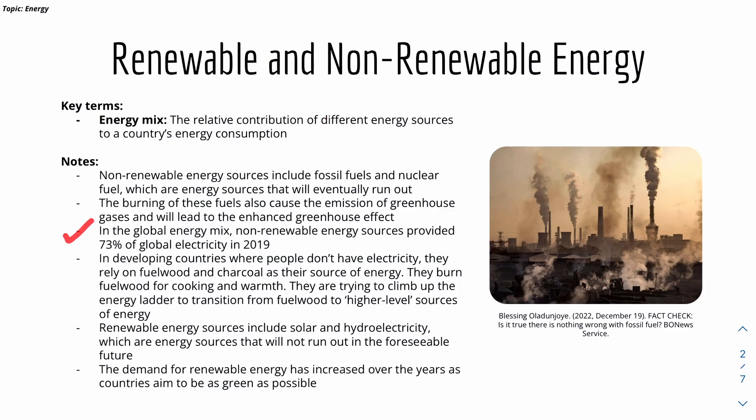Here are some statistics for the global energy mix. In developing countries where people don't have electricity, they rely on fuel wood and charcoal as a source of energy — for example for cooking, warmth, and lighting. They are trying to climb up the energy ladder to transition from fuel wood to higher level sources of energy, such as renewable energy.